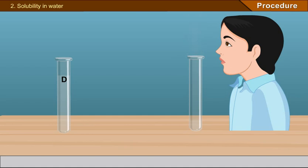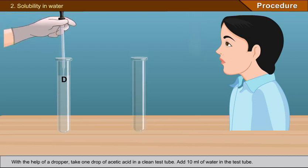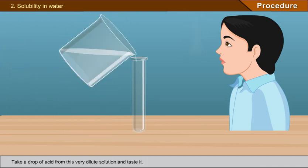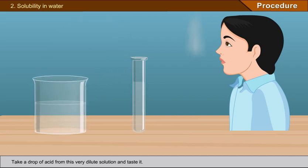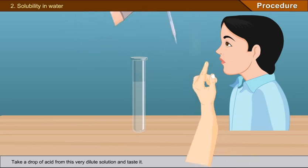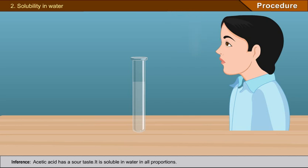Experiment 2 - Solubility in water: With the help of a dropper, take 1 drop of acetic acid in a clean test tube. Add 10 ml of water in the test tube. Take a drop of acid from this very dilute solution and taste it. Observation: it has a sour taste. Acetic acid dissolves in water. Inference: acetic acid has a sour taste and is soluble in water in all proportions.